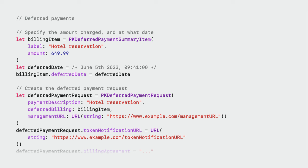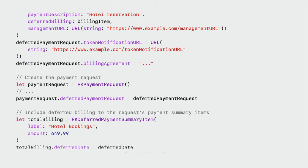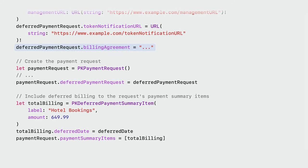Let's take a look at how to incorporate deferred payments within your app. First, we create a PKDeferredPaymentSummaryItem, which outlines a description of the charge and the amount that will be taken. You also set the date for when the payment will be taken. Next, we create a PKDeferredPaymentRequest and provide it with the summary item we just created, along with other information regarding the management of the payments.